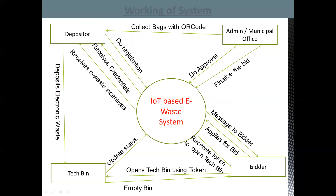Likewise, garbage collectors or bidders will also submit their organizational details to the system. The admin of the system authenticates the login credentials of depositors and bidders. The municipal corporation sends collection bags and QR code stickers to registered depositors and updates their records in the system. The depositor fills electronic waste into the bag containing a QR sticker and scans the sticker at the tech bin. If authentication is successful, the lid of the bin gets opened, the depositor deposits the waste, and then closes the lid.